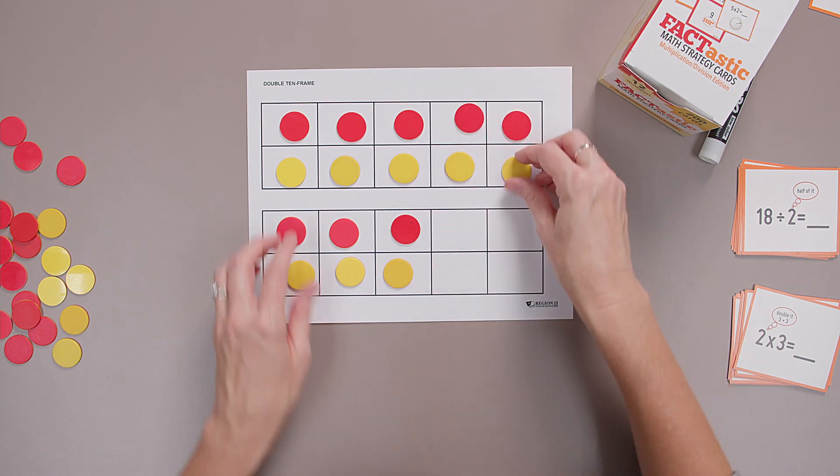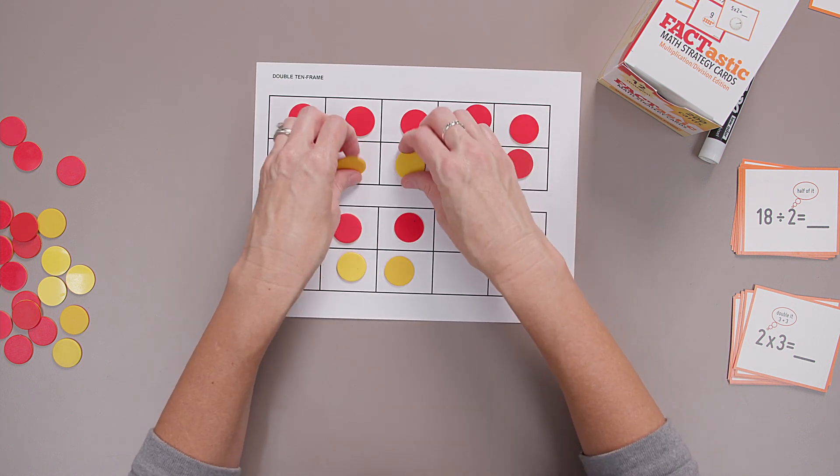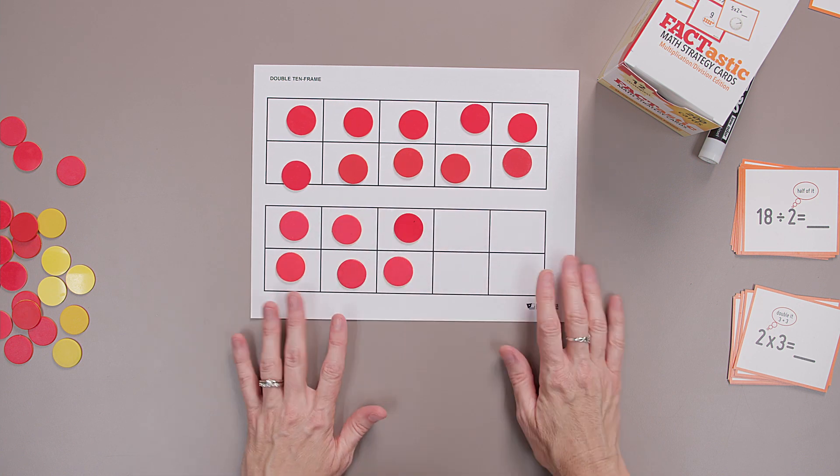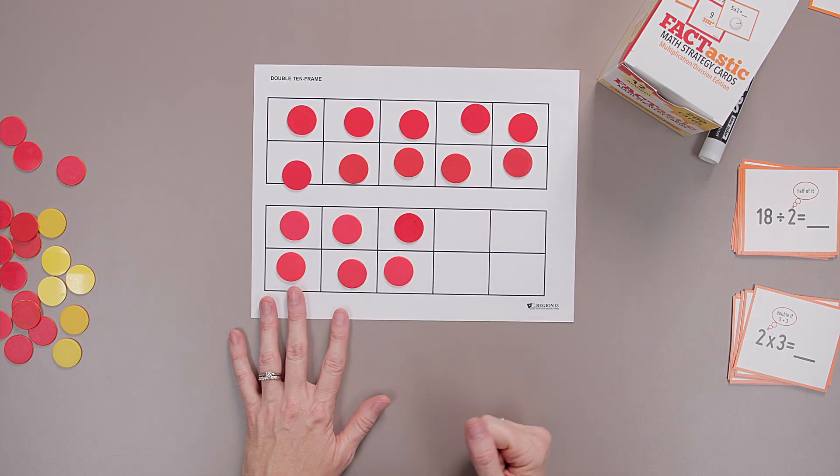When I think about multiplying by two, I think about doubling. When I think about dividing by two, I think about halving. What's great about multiples of two? Well, there's patterns. Let's look for those patterns in our skip counting again.